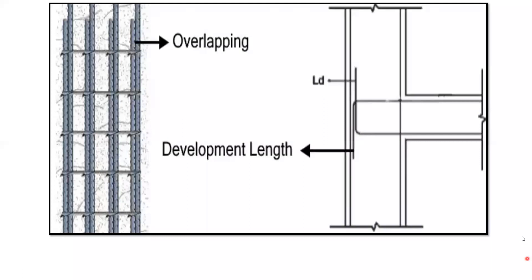From the face of the column, this much length — 552 mm — is what we need to provide. The bar is bent and brought in this way for that distance. This is the practical importance of development length.